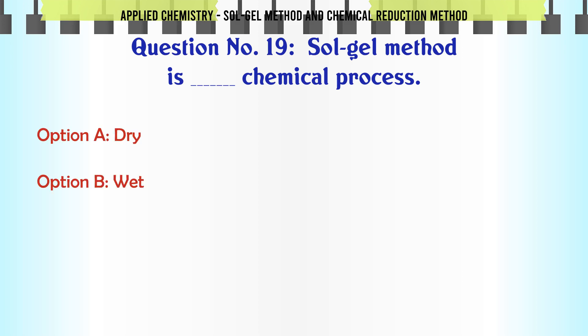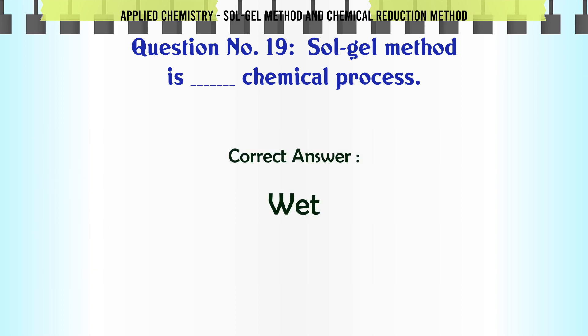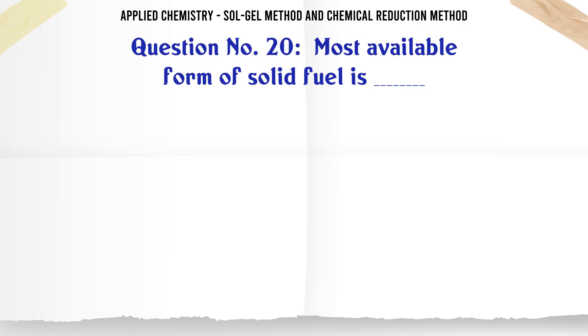Sol-gel method is which type of chemical process? A. Dry, B. Wet, C. Semi-liquid, D. Semi-solid. The correct answer is Wet.